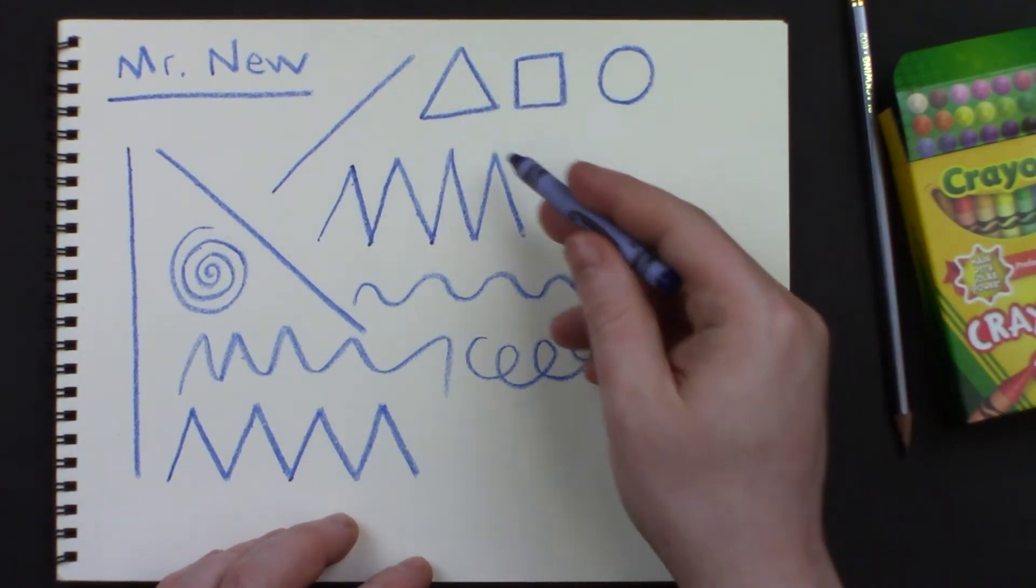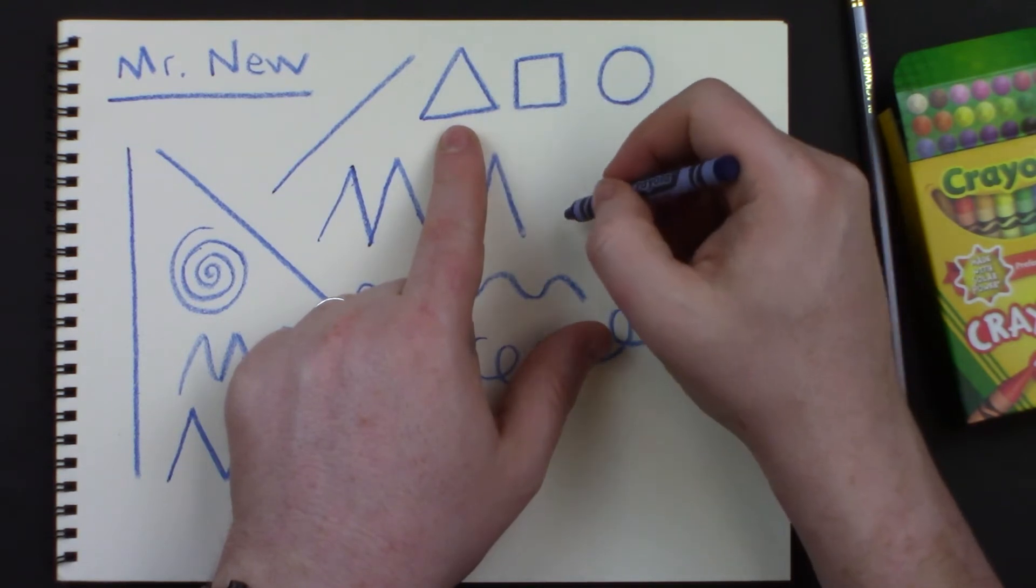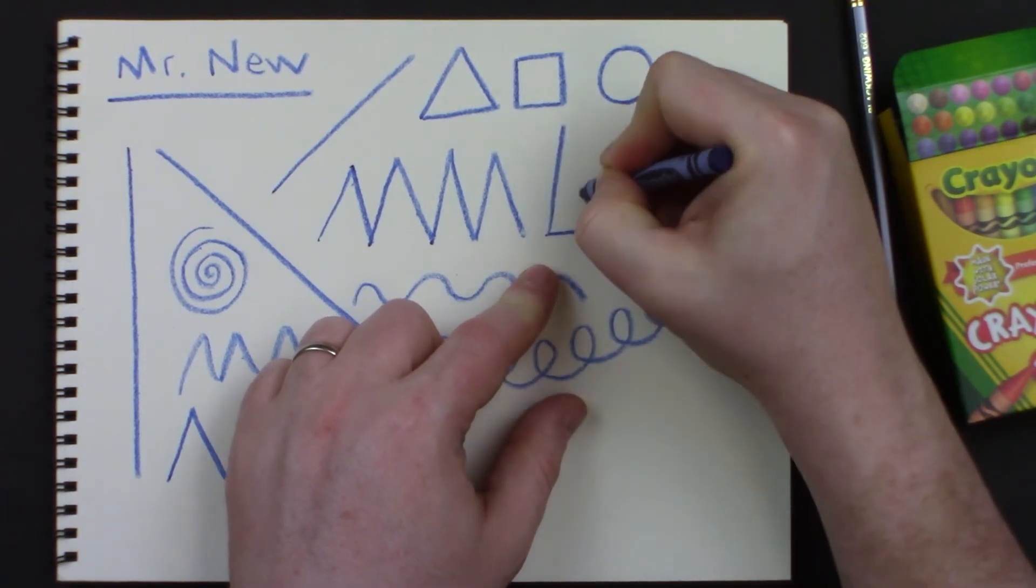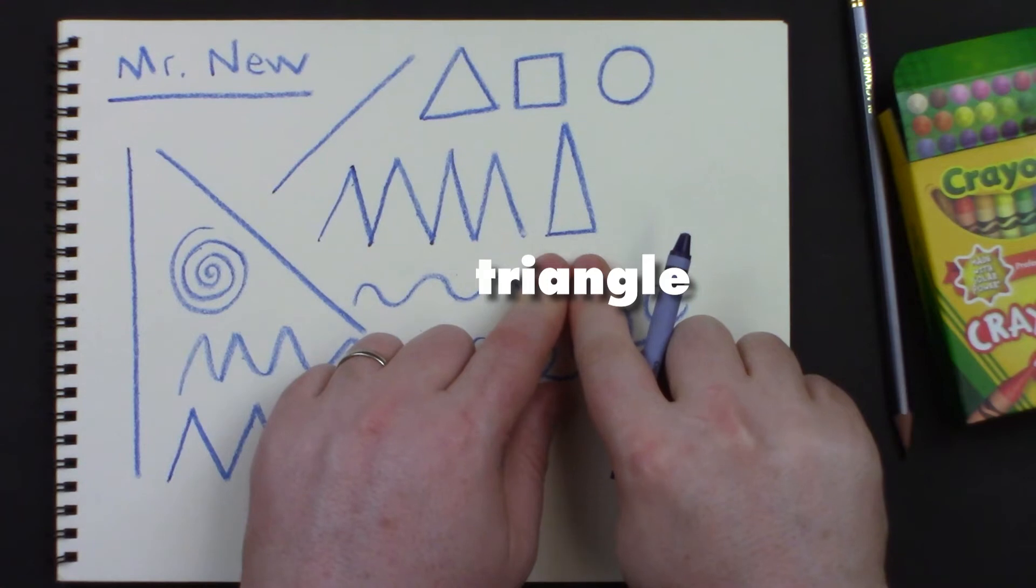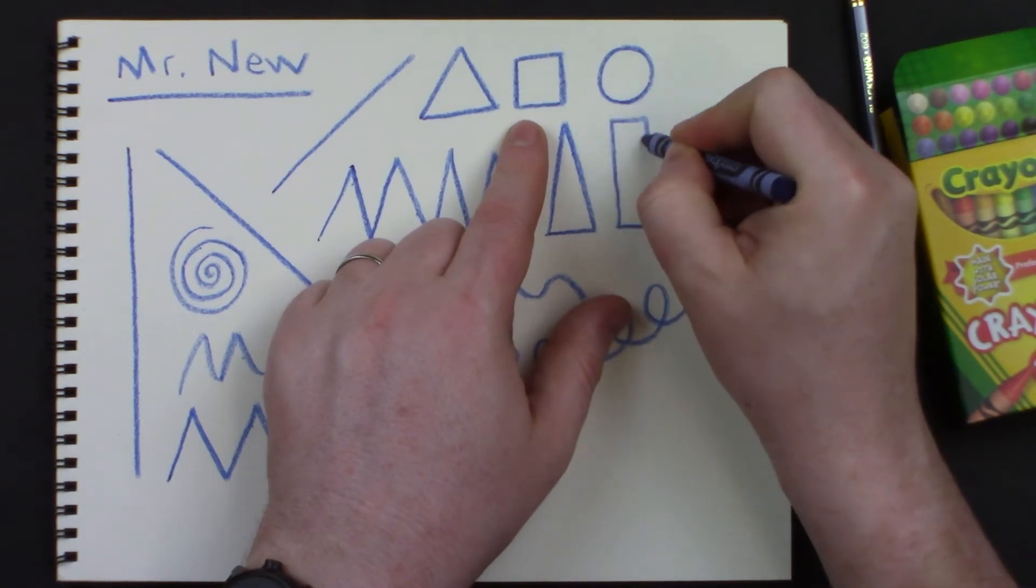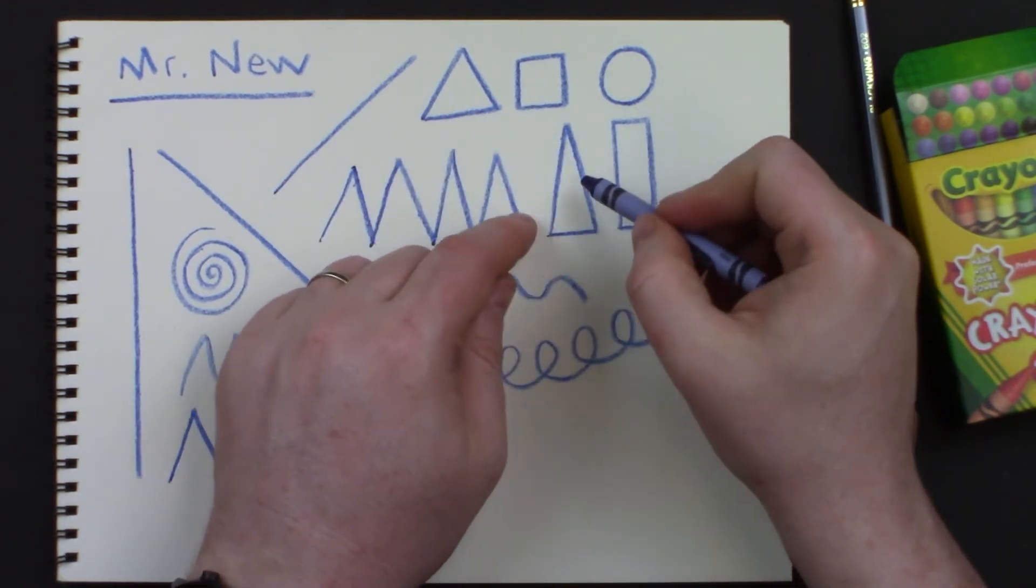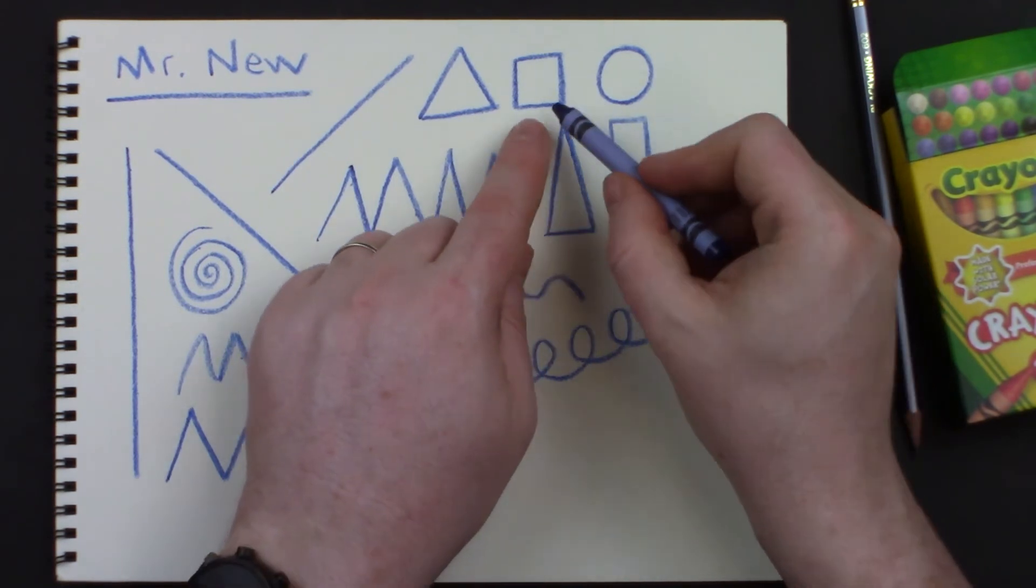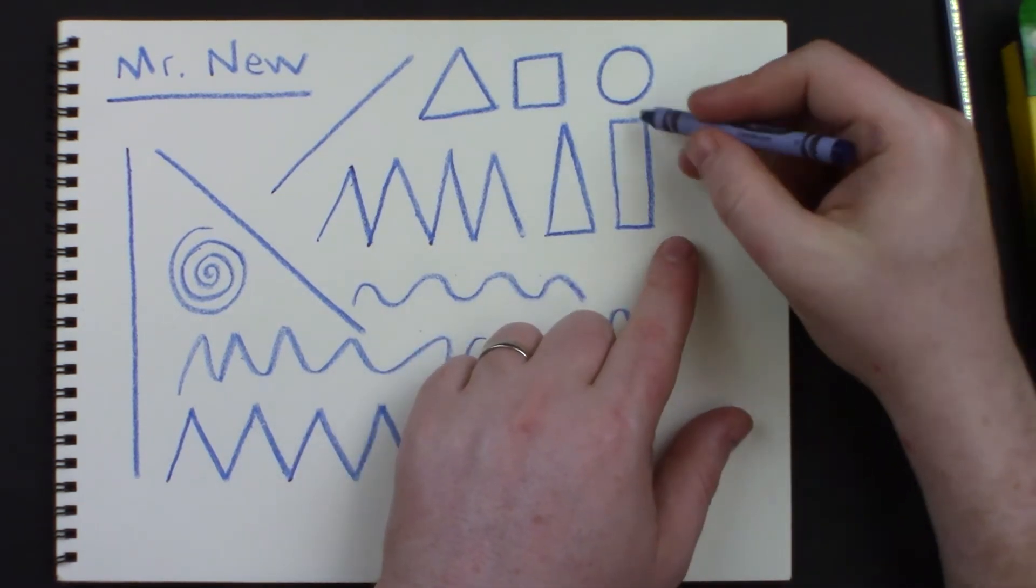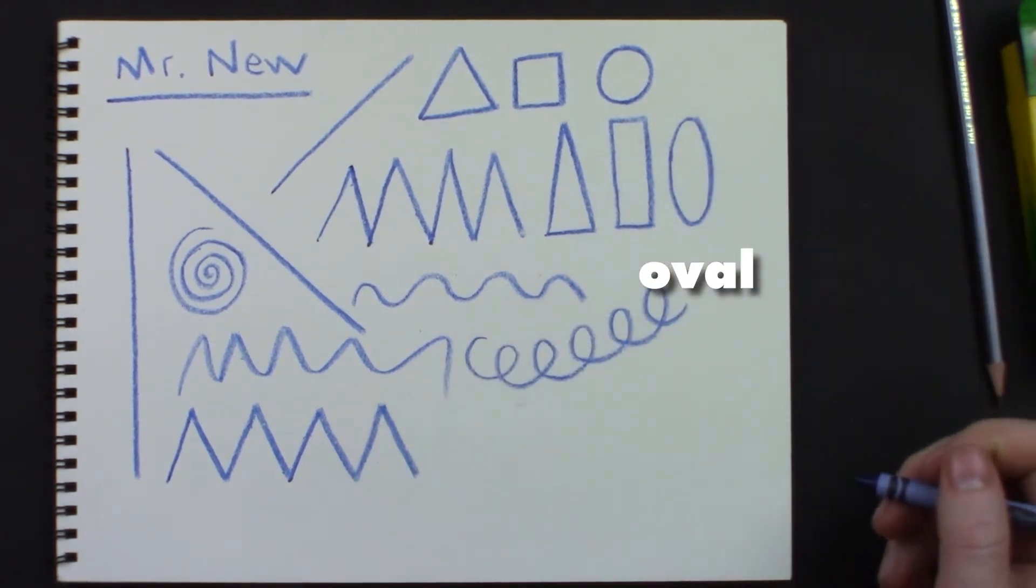Let's do some stretching and shifting and changing of those same shapes. What does it look like if I take my triangle and I stretch it really tall? That's still a triangle, isn't it? What if I take my square and I stretch it really tall? That's not a square anymore, is it? So a stretched out triangle is still a triangle, it's just a different shape of a triangle. But a stretched out square becomes a rectangle. And what if I stretch out my circle? It turns into an oval.